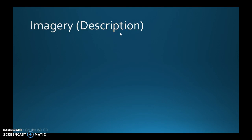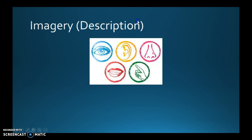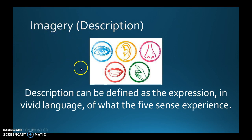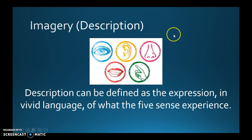Now let's talk about imagery. Imagery is dealing with description. When you describe something, you're trying to have people imagine or see what's in your head. These really deal with the five senses. Description can be defined as the expression, in vivid language, of what the five senses experience. If you're trying to make a story come alive, you want to relate a particular sense — or more than one — to help get the reader to understand and imagine and feel like they're there. Imagery is a narrative device, a tool being used to help get part of the narration across to the reader.